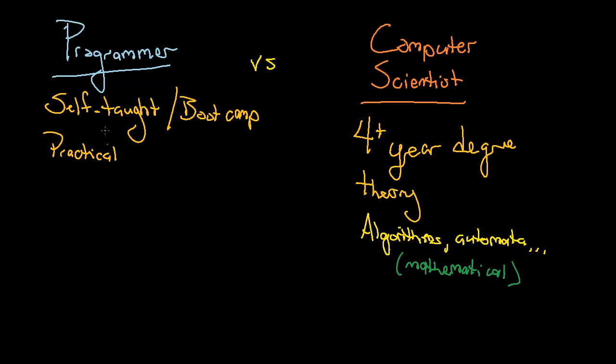Programmer: self-taught, boot camp, practical side. Computer scientist: deals with theory. There's a quote from Dijkstra that computer science is no more about computers than astronomy is about telescopes. In astronomy you use telescopes, but using a telescope doesn't make you an astronomer.